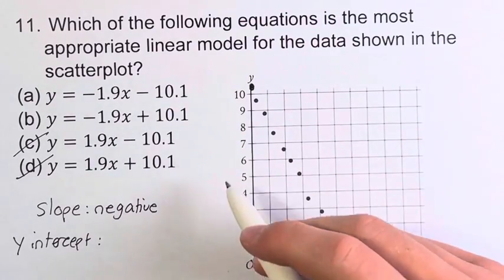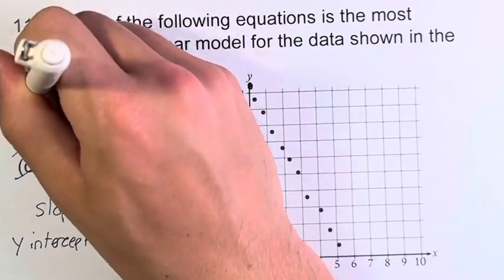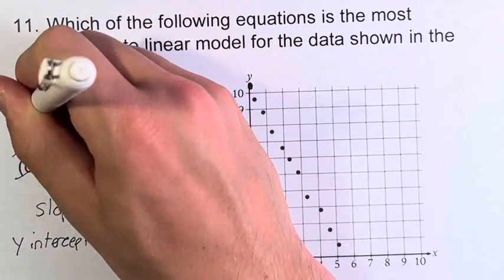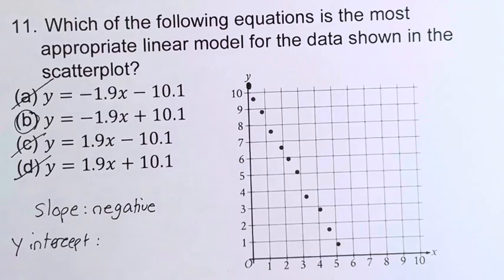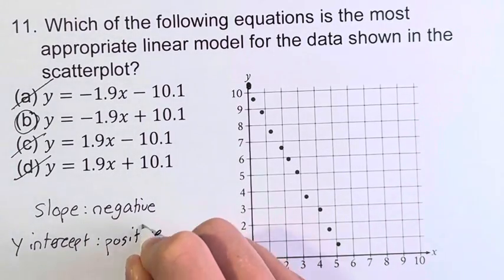And like I said, it's a little bit above 10, which makes sense why the value of the y-intercept in B is 10.1. So therefore, B and not A is your final answer because the slope is negative and the y-intercept is positive.